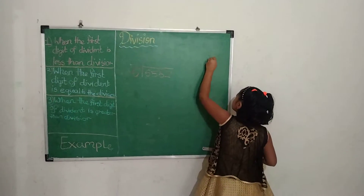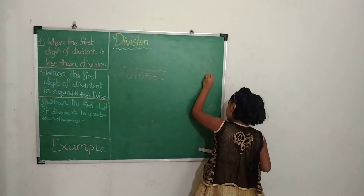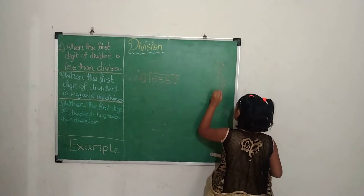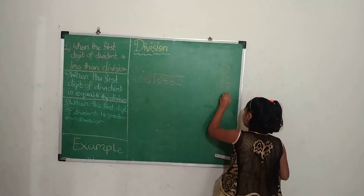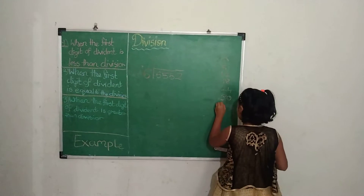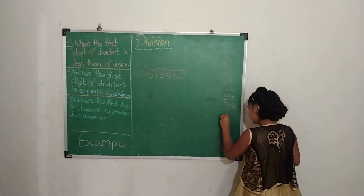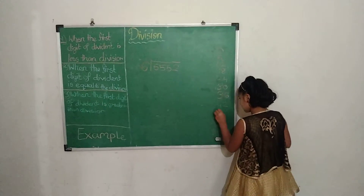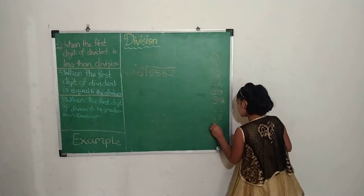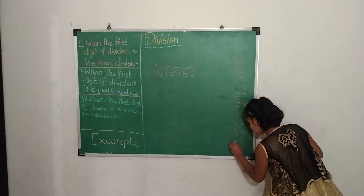We start from zero: 6 zeros are 0, 6 ones are 6, 6 twos are 12, 6 threes are 18, 6 fours are 24, 6 fives are 30, 6 sixes are 36, 6 sevens are 42, 6 eights are 48, 6 nines are 54, 6 tens are 60.